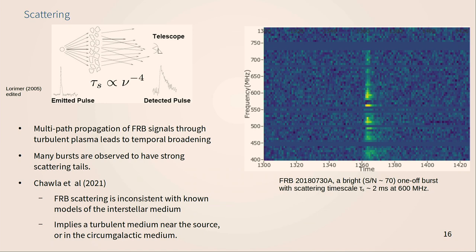Another significant property worth mentioning is that many FRBs show evidence of scattering by a turbulent plasma in their vicinity. When light from a source propagates outward it gets scattered off a turbulent medium, so light from different paths makes its way toward the observer, getting delayed. The amount it gets bent is greater at lower frequencies. Going through models of turbulence spectra, you end up with a frequency-to-the-minus-four power dependence on the scattering width. A paper by Pragya Chawla last year argued that the observed scattering is inconsistent with known models of the Milky Way interstellar medium, so it's most likely coming from the vicinity of the FRB host or the circumgalactic medium of the host.